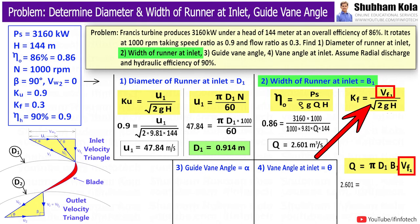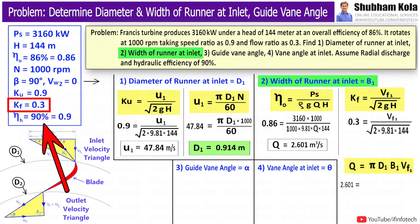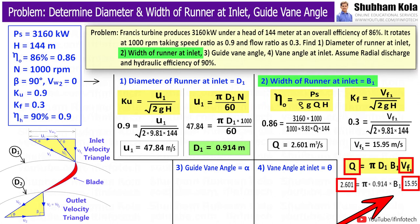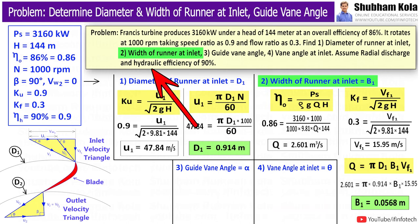And Vf1 is given by formula Kf × √(2gH), where Kf value, i.e. flow ratio, is given in question as 0.3. Therefore, Vf1 we got as 15.95 m/s. So, now we have found the values of discharge Q and Vf1 in order to calculate B1, i.e. width of runner at inlet. So, here we got width of runner at inlet as 0.0568 m.